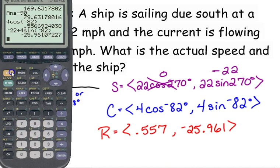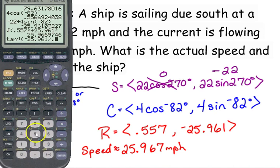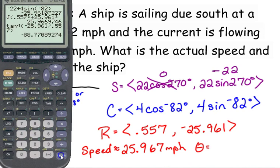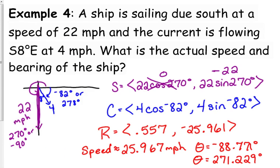The actual speed is the magnitude of that resultant vector. 0.557 squared plus 25.961. Yes it was negative but leave it out. The actual speed is approximately 25.967 miles per hour. And the angle, inverse tangent of negative 25.961 over 0.557, negative 88.77 degrees. Technically that's okay, we are in the fourth quadrant, but I do prefer positive angles. So the co-terminal is 271.229. Not that much off of completely due south, just a little bit towards east.